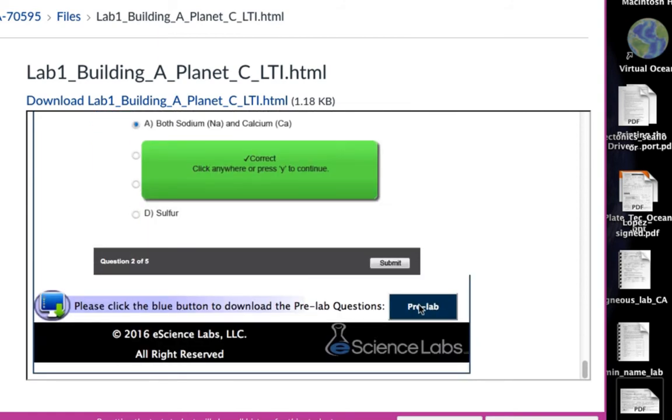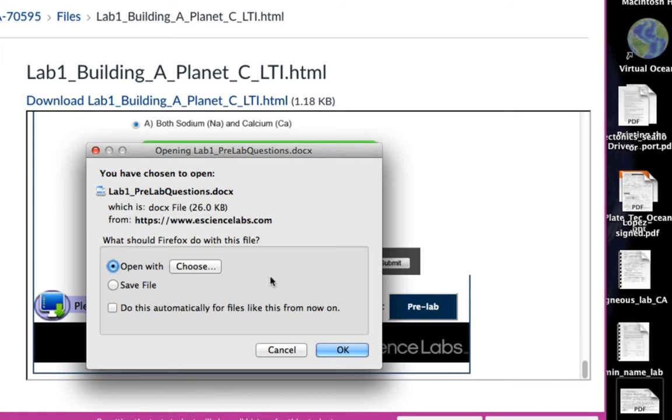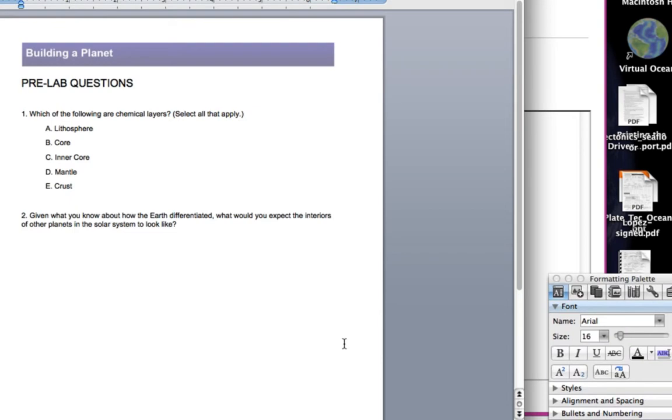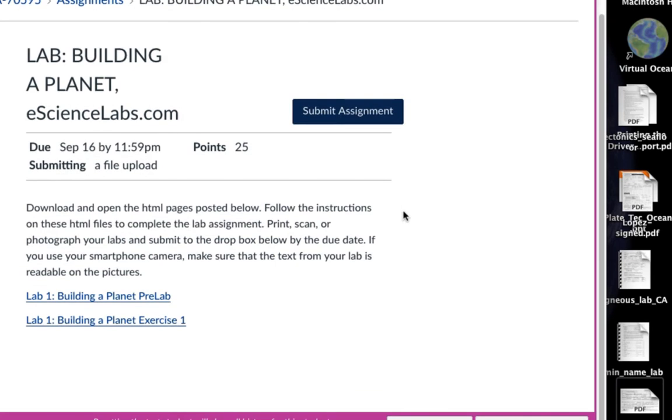Then you want to do the pre-lab. When you click on here, it'll give you a link to Microsoft Word. You'll download these questions. The important thing about here is once you complete this assignment, this is what you need to photograph or scan or make a PDF of. This is what you want to send me in the Dropbox. If we go back to our lab over here, you'll see that there's a submit assignment button. You'll click on here and you'll attach those files. There's a pre-lab and there's exercise one.